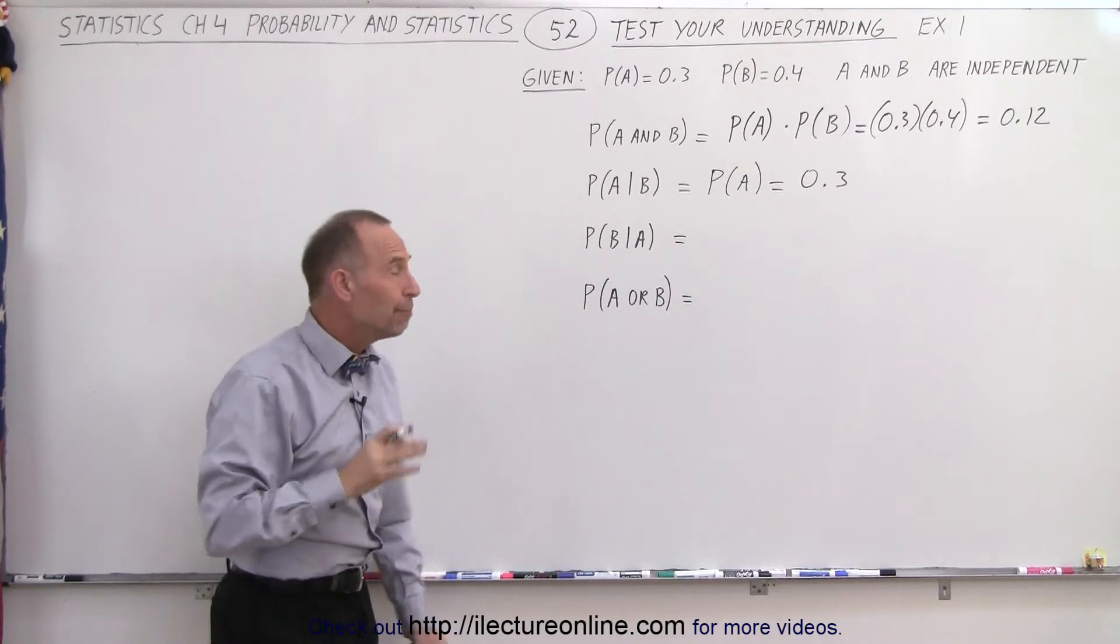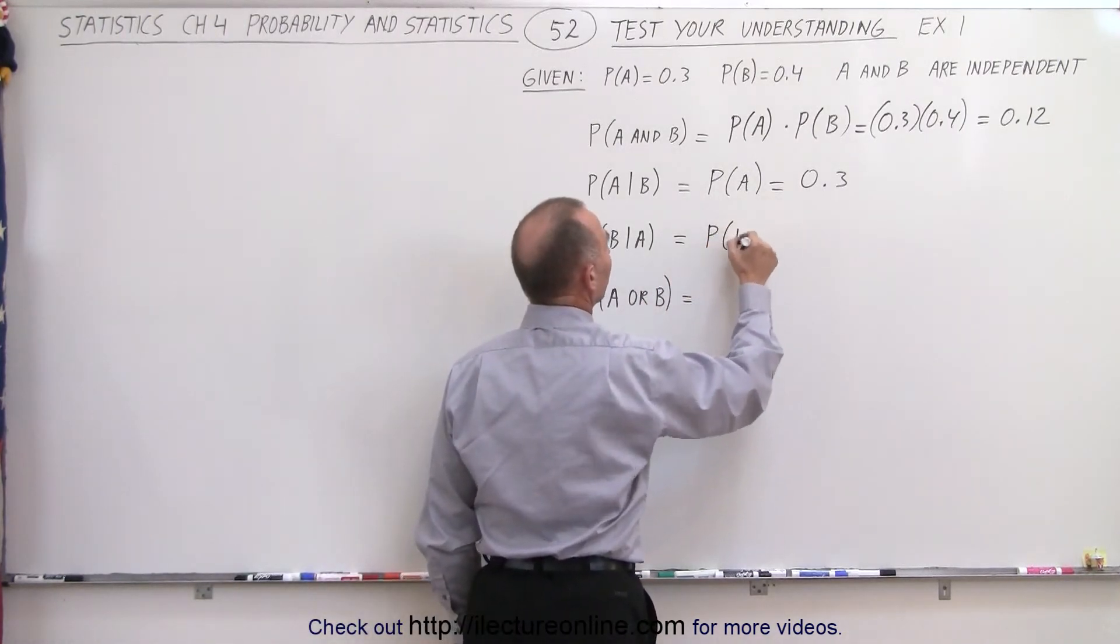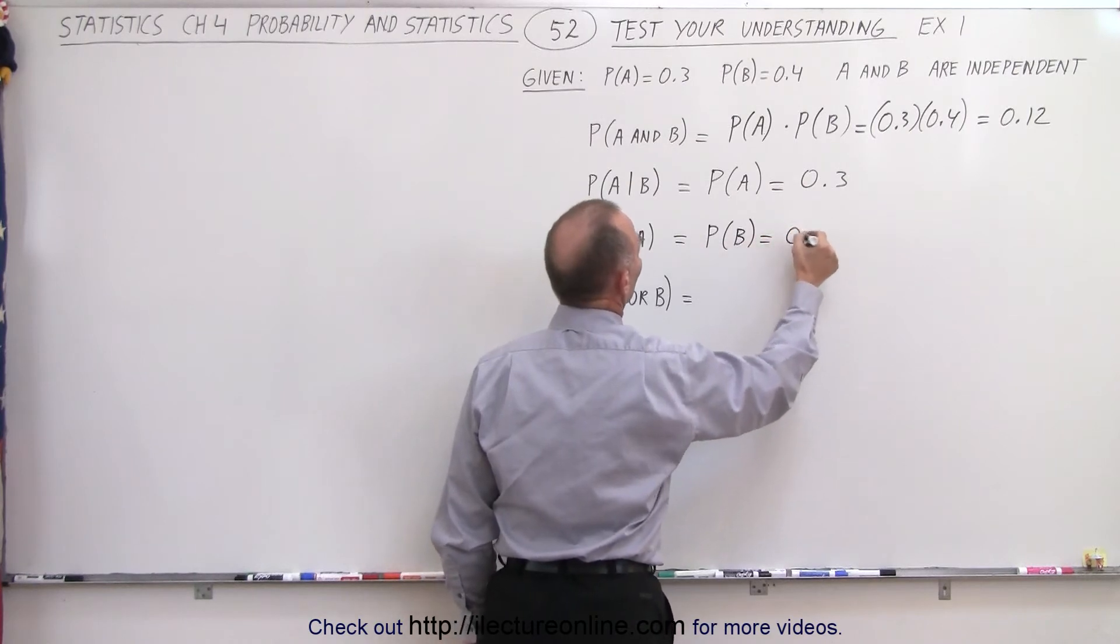Same over here. B will not be affected by A, so therefore this must equal the probability of B, which is equal to 0.4.